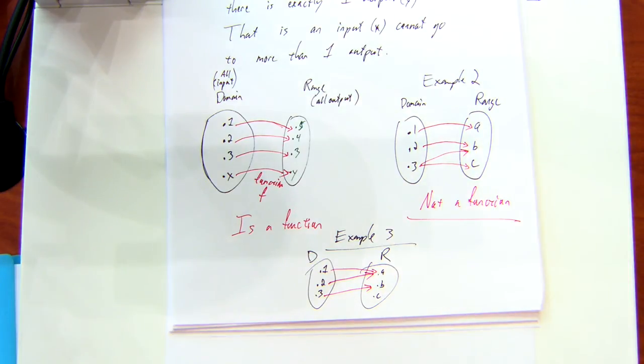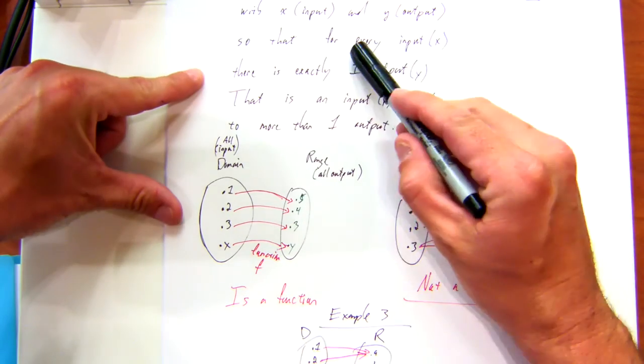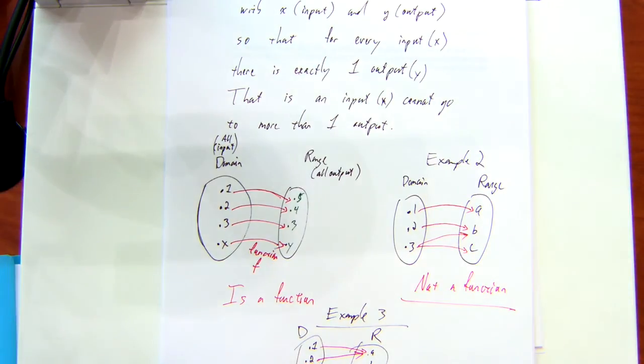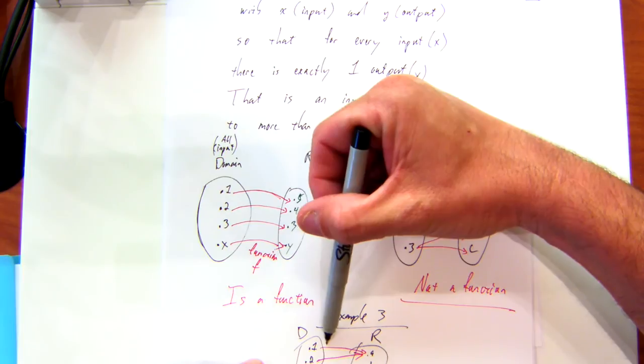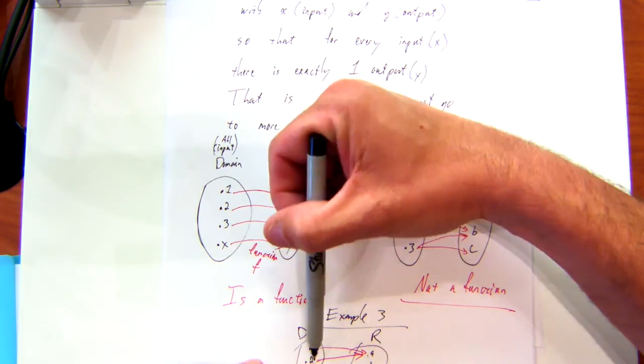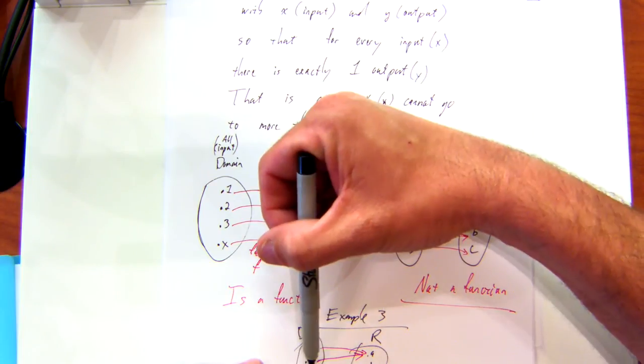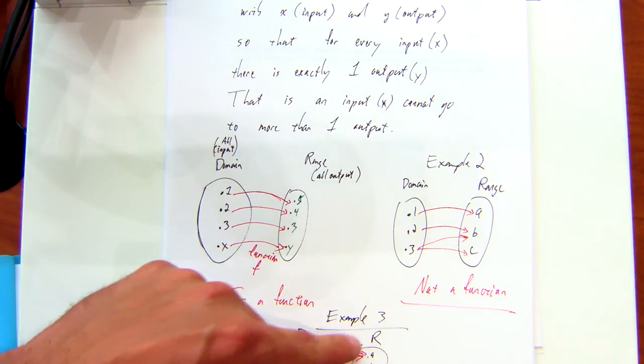Is this a function? Yes, it is. Here's why. This is the key part up here. For every input, there is exactly one output. So I look at this input here. My input is one. Does this arrow go to exactly one number? Yeah. Does this arrow go to exactly one number? Yes. And this arrow goes to exactly one number.